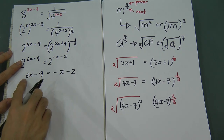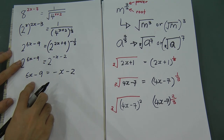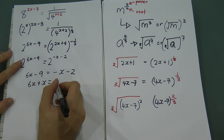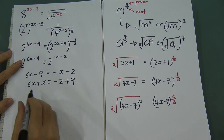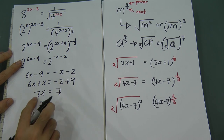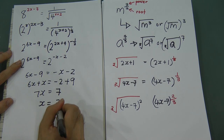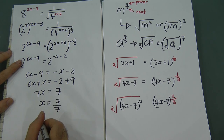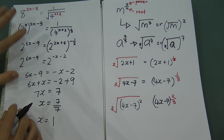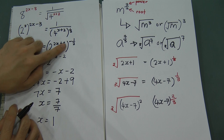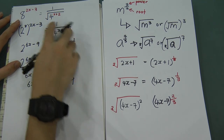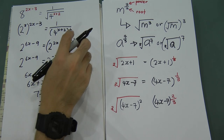Solving for x: move the negative x to the left to get 6x plus x, and move the negative 9 to get negative 2 plus 9, giving 7x equals 7, so x equals 1. The most difficult part is recognizing that 1 over means negative, and that square root means power of 1 over 2.